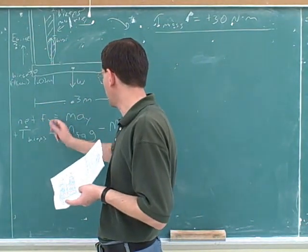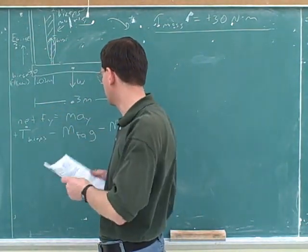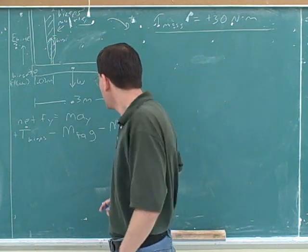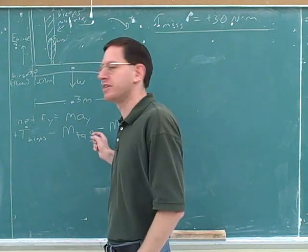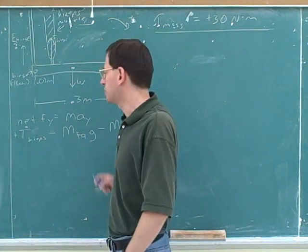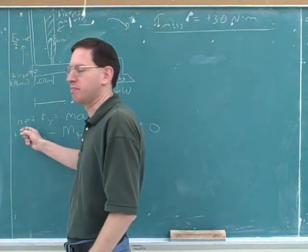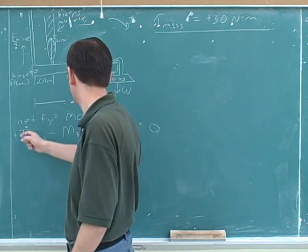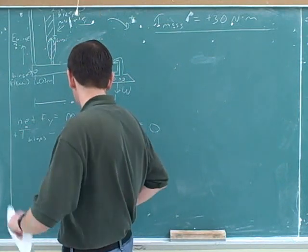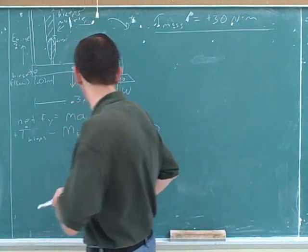Now you're using Newton's second law in the vertical components, and you've already put in the signs. So I'm going to put in a dot to show that this is just the magnitude now. This is up, and these two are down.